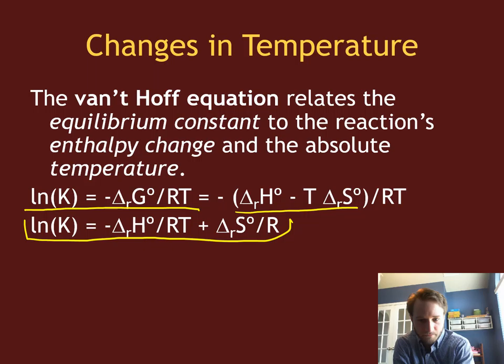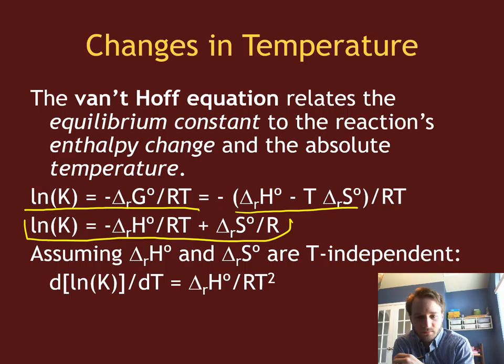And we're going to assume for the sake of this problem that enthalpy and entropy are independent of temperature, so the change in the equilibrium constant with respect to a change in temperature is just going to be equal to delta H divided by RT squared. So I just take the derivative of this equation with respect to T.